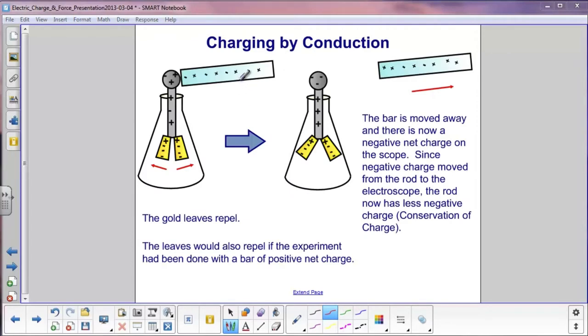The negatively charged rod is brought next to the electroscope. It touches the sphere. The extra negative charge spreads out down the rod and distributes itself equally amongst the two leaves. Since they both have a negative charge on them, they will repel each other, and you can see how they've spread out here.